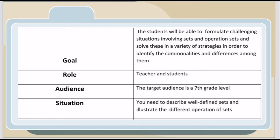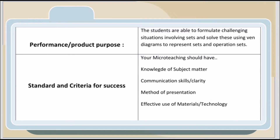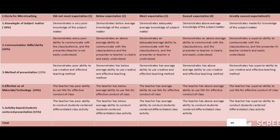The role involves teacher and students. The target agents are at a Grade 7 level. The situation: you need to describe well-defined sets and illustrate the different operations of sets. Performance or product purpose: students are able to formulate challenging situations involving sets and solve these using Venn diagrams to represent sets and operations on sets. Standards and criteria for success: your micro-teaching should demonstrate knowledge of subject matter, communication skills or clarity, method of presentation, and effective use of material or technology. Here are our rubrics for micro-teaching.